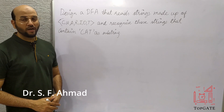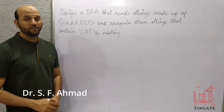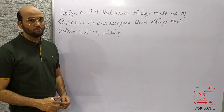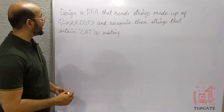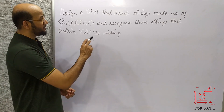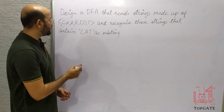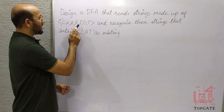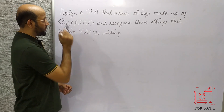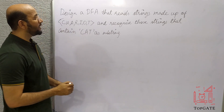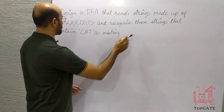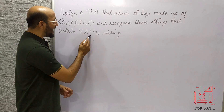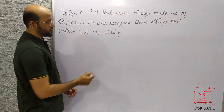Hello students, welcome to the channel TopGate. In this video I will discuss one more DFA problem: design a DFA that reads strings made up of C-H-A-R-I-O-T and recognizes those strings that contain 'cat' as a substring.